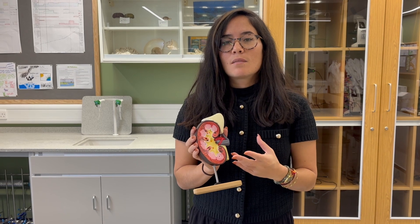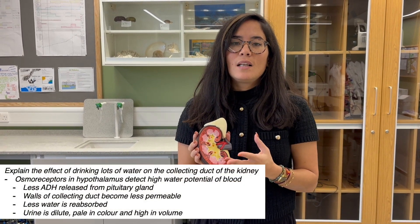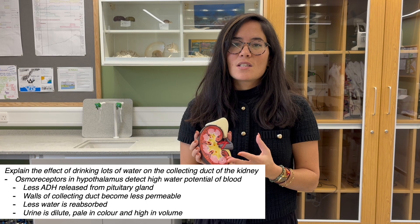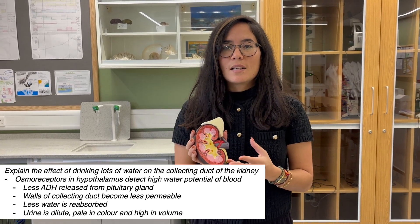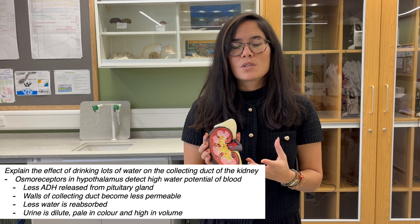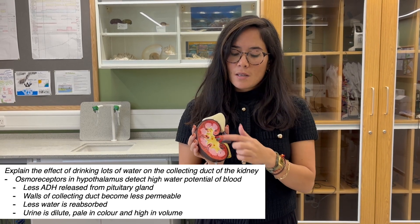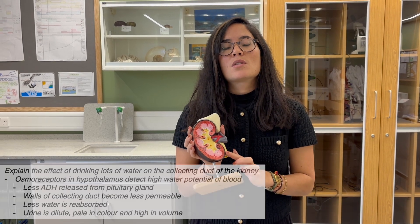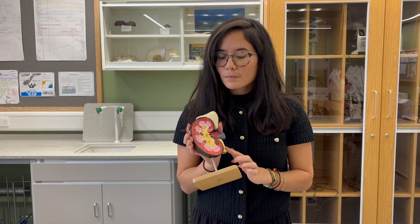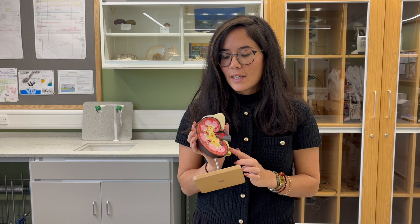The opposite is true when we've had lots of water to drink. Our hypothalamus detects high water levels, less ADH is secreted by the pituitary gland, the walls of the collecting duct are less permeable to water, and less water is reabsorbed back into the blood, so there's a lot of water available to produce urine. That's the osmoregulatory role of the kidney.